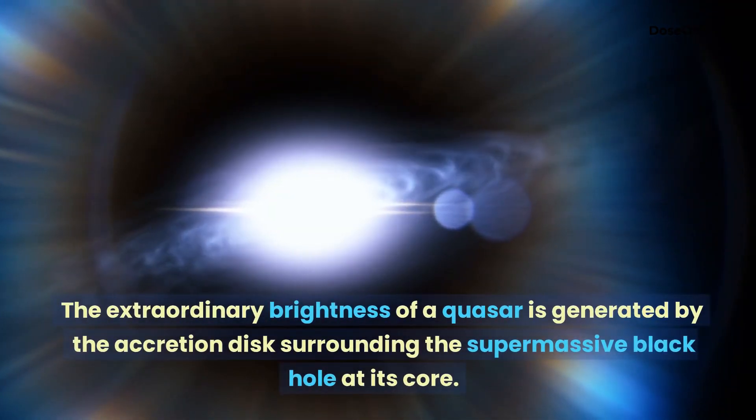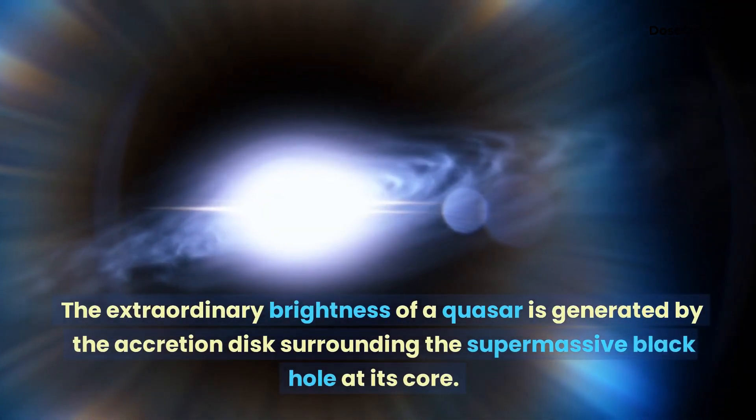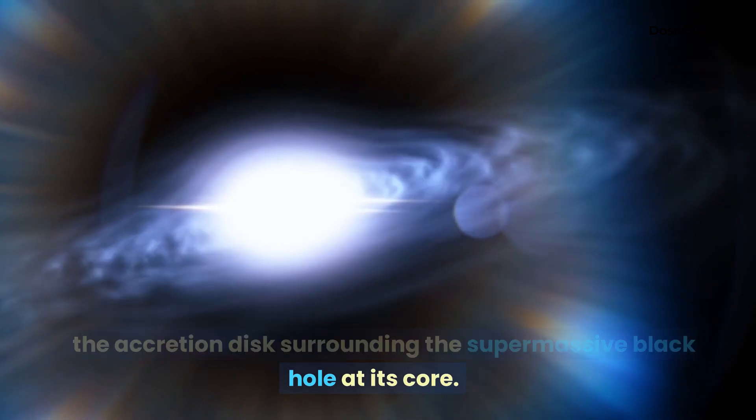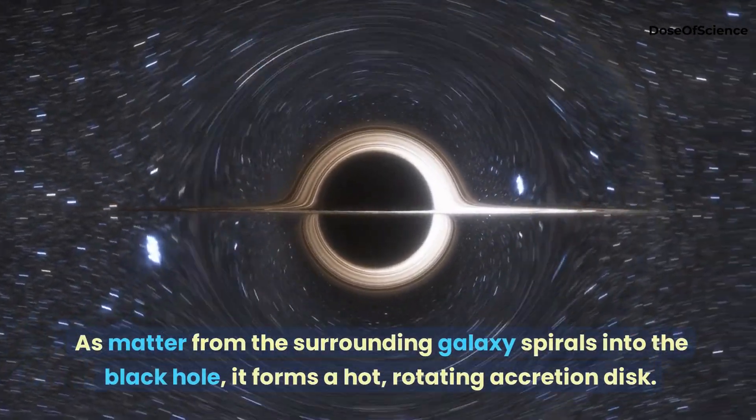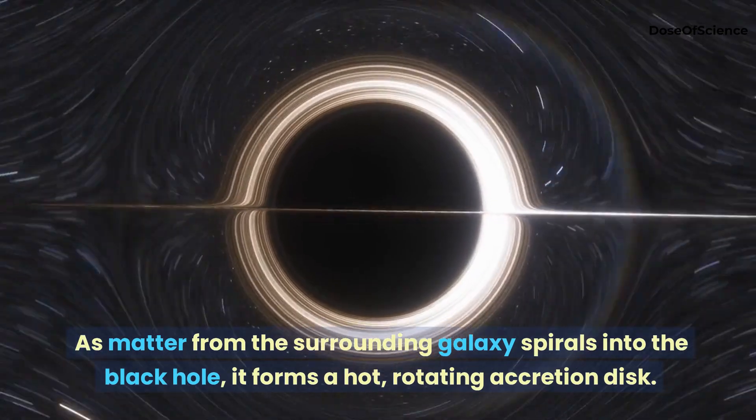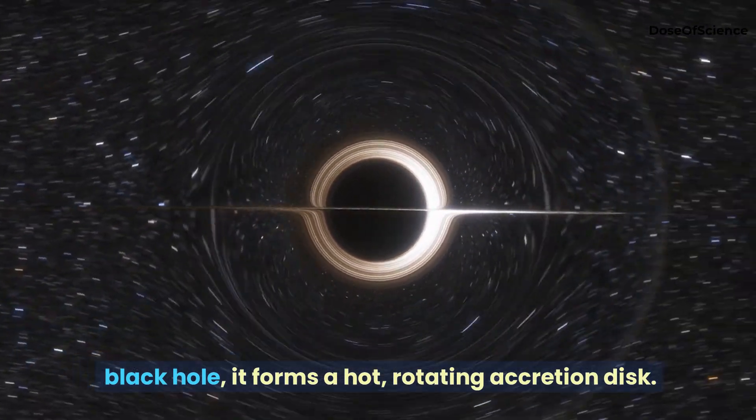The extraordinary brightness of a quasar is generated by the accretion disk surrounding the supermassive black hole at its core. As matter from the surrounding galaxy spirals into the black hole, it forms a hot, rotating accretion disk.